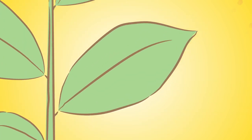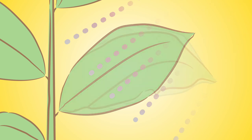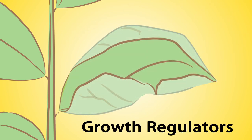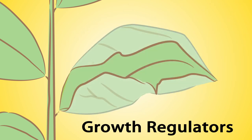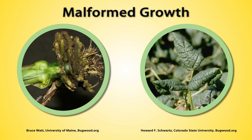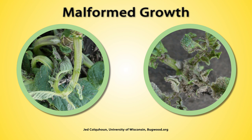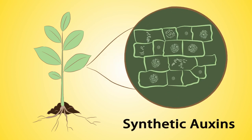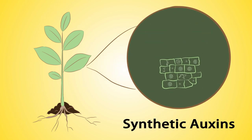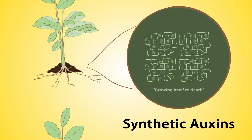Growth regulators are commonly referred to as synthetic auxins. These chemicals mimic natural plant hormones and interrupt plant cell growth in newly forming stems and leaves. They affect protein production and normal cell division, leading to malformed growth. Synthetic auxins also kill plants by causing the cells in the tissue that carry water and nutrients to divide and grow without stopping – often called growing itself to death – which is seen by one side of the stem being longer than the other.